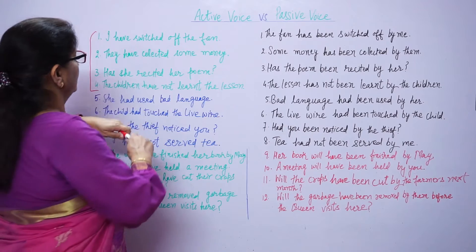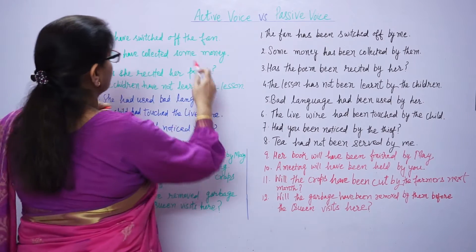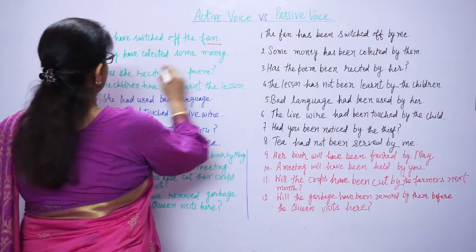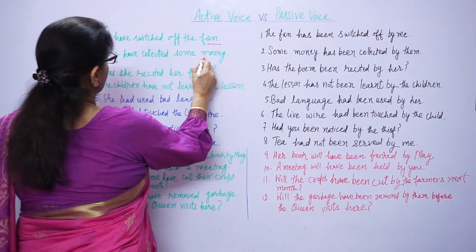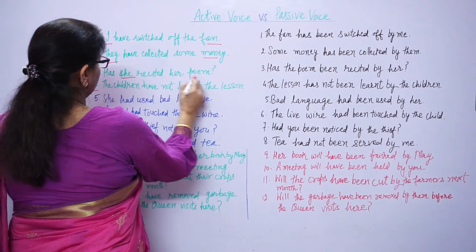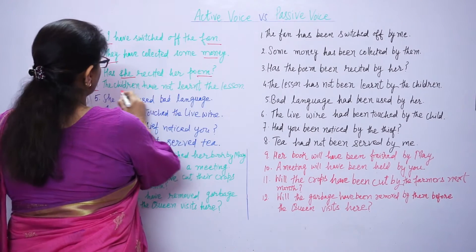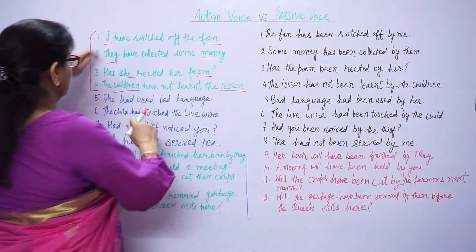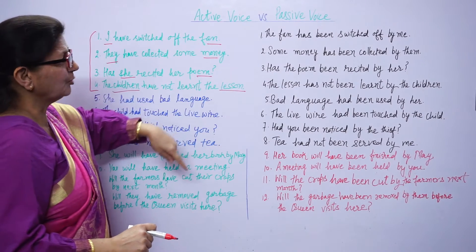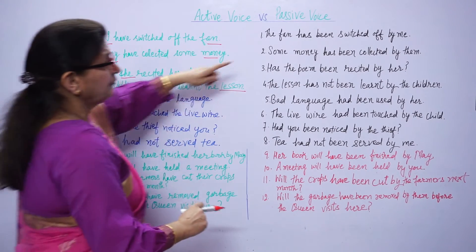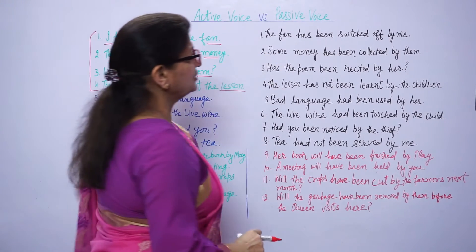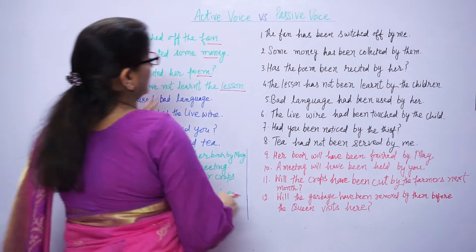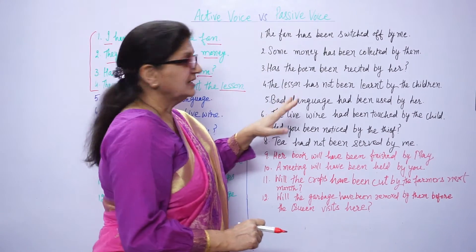You see — subject: I, object: fan; subject: they, object: money; subject: she, object: poem; subject: children, object: lesson. These are subjects, these are objects. The fan has been switched off by me. Very simple sentences.